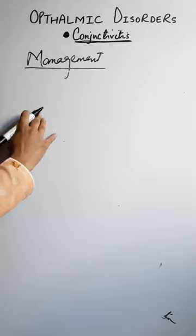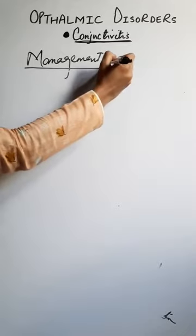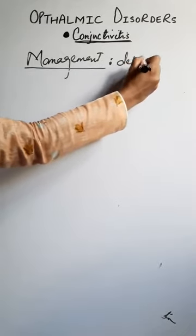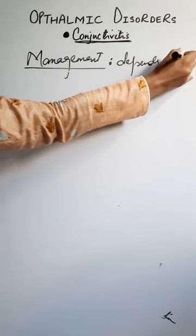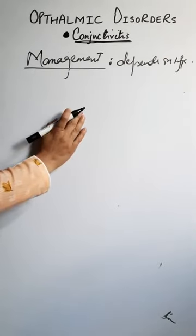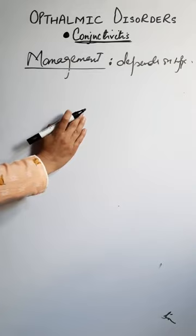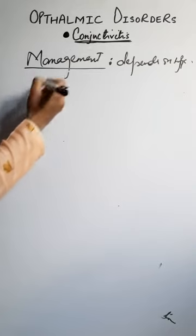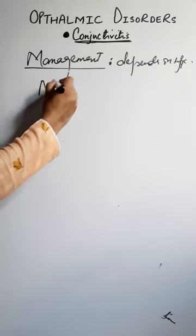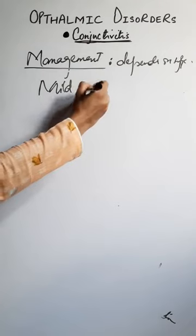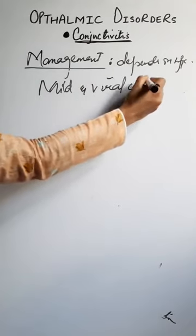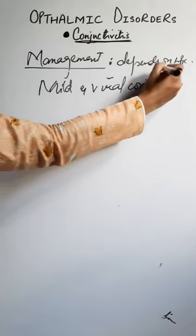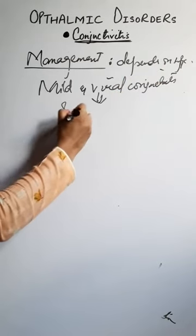These were the diagnostic evaluations. Now we will move towards the management. The management of conjunctivitis depends on the type — which type of conjunctivitis is present — and accordingly we manage it. Most types of mild and viral conjunctivitis are self-limiting.